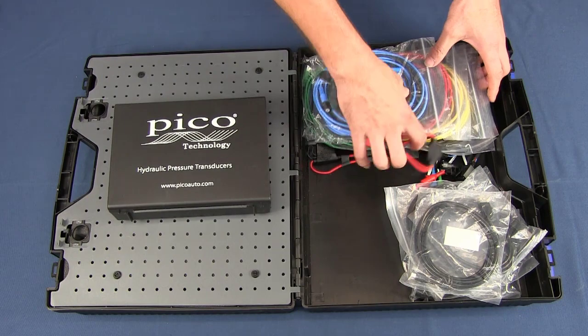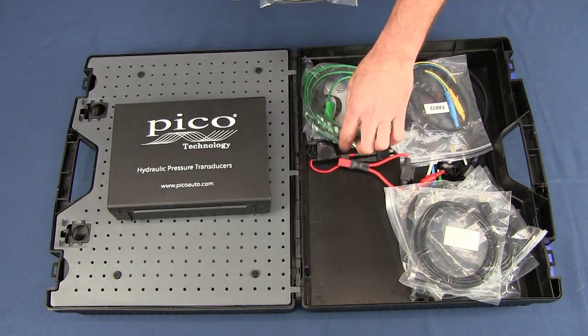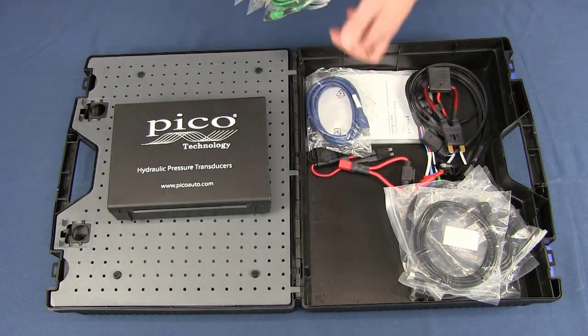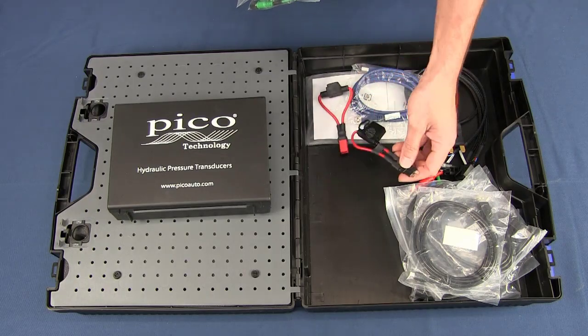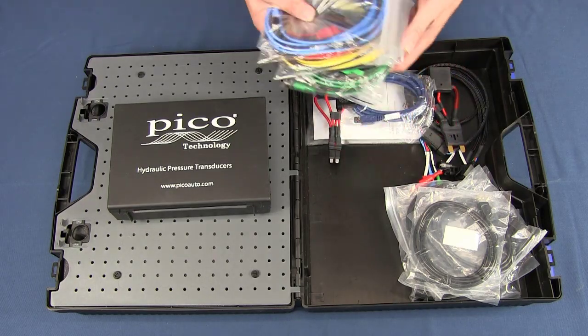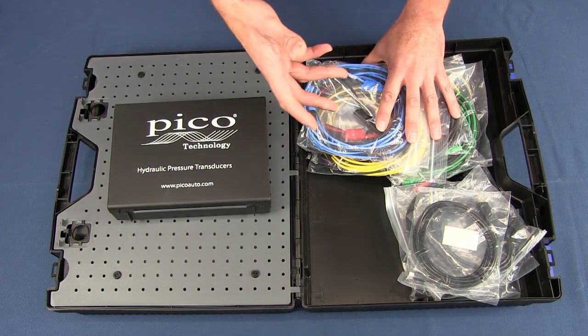Amongst other things in the kit, there are also some breakout leads and some fuse connectors. These are really useful in conjunction with the current clamps, especially if you're looking at low pressure fuel pumps.